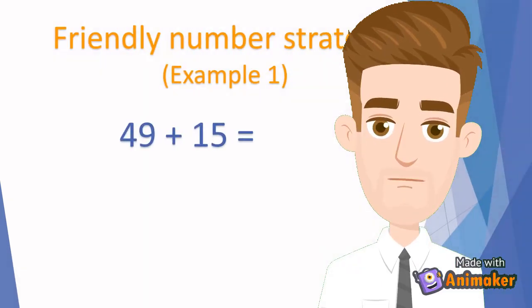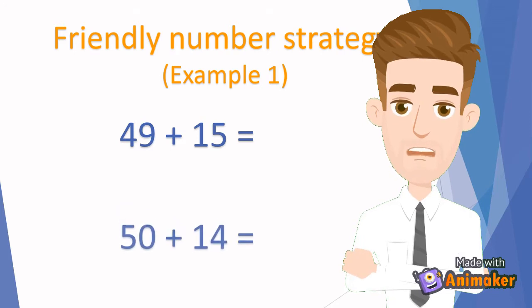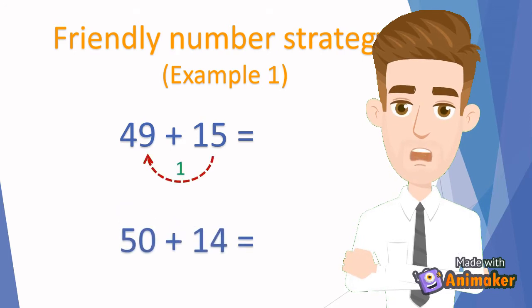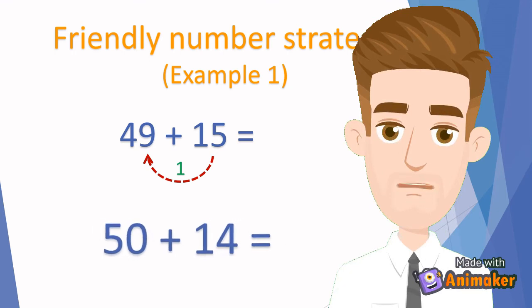For example, 49 plus 15 can be written as 50 plus 14 by moving 1 from 15 to 49. Now that we have made the number friendly, it is easy to calculate. That is, 50 plus 14 is 64, so the answer to our problem is 64.